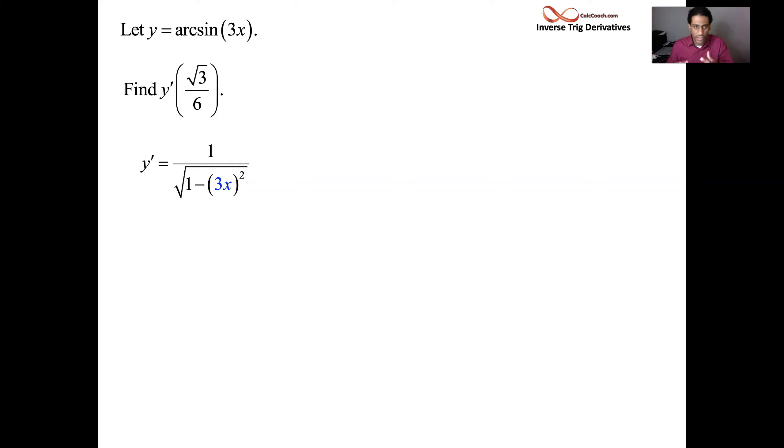When you have a function other than an x, you still treat it as if it's the derivative of the outside function. So 1 over the square root, instead of saying of 1 minus x squared, we say 1 minus the inside function squared. But then chain rule says don't stop there. Multiply by the derivative of that inside function. 3x's derivative is 3.